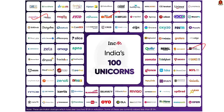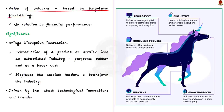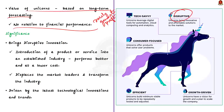The value of unicorns is generally based on how investors and venture capitalists feel they will grow, so their valuation is based on long-term forecasting and has nothing to do with financial performance. Many unicorns rarely generate profits when they first start. Unicorns are significant because they bring in disruptive innovation — introducing a product or service into an established industry that performs better and at a lower cost, displacing market leaders and transforming the industry.